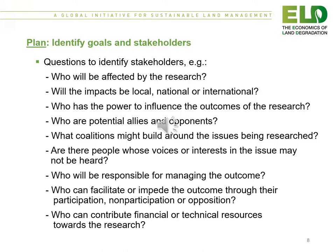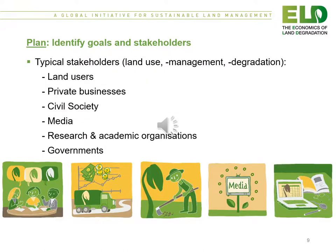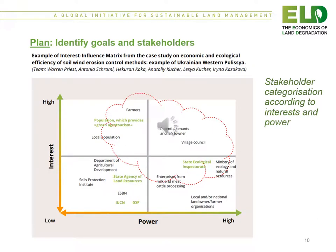Suitable questions to identify stakeholders are included in the list shown on the slide. Typical stakeholders include land users, government agencies, the private sector, civil society, media, and research and academic organizations. An example tool used to identify goals and stakeholders is the interest versus influence matrix. On the y-axis is level of interest from low to high, and on the x-axis is level of influence from low to high. We tend to aim for the upper right-hand quadrant.